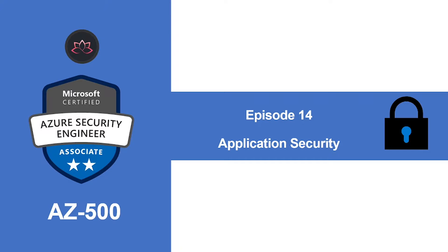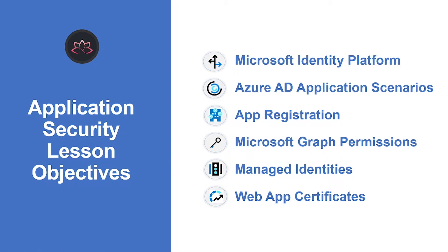Hey, welcome back. My name is Sushant Suthish and I'm your trainer for this AZ-500 Azure Security Engineer Certification course. In this video, we're going to talk about Application Security. We will start with learning about Microsoft Identity Platform, the different types of Azure AD application scenarios, how to register an app, different types of Microsoft Graph permissions, Microsoft Managed Identities, and Web App Certificates as well. So without wasting any more time, let's get into it.